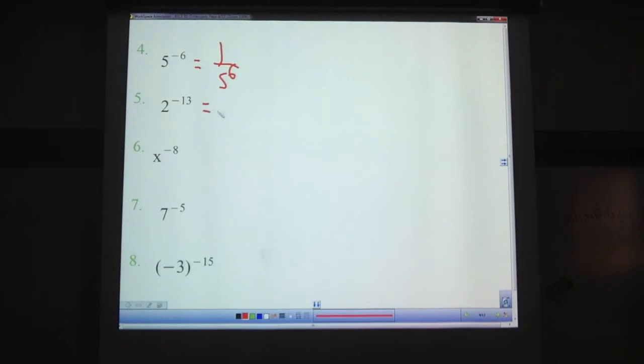Check out these here. Pause the video. And we're back. Here, you should have 1 over 2 to the 13th. And I'll go over this one as well. 1 over parentheses, negative 3 to the 15th. Notice that it stays negative there. That didn't change. Negative exponents don't do that. All right? Check out these 5 here. Pause the video.